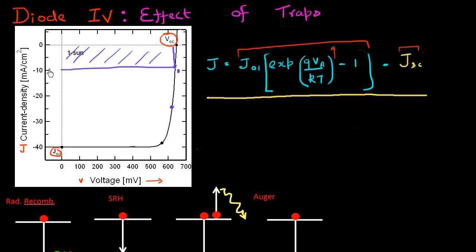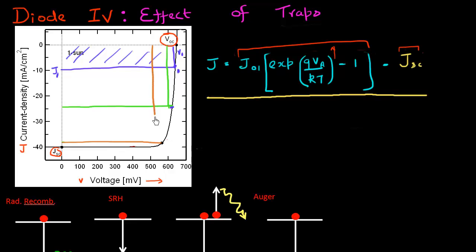If I'm operating at point number one, I'm operating at this much current and this much voltage, and the product of the two represents the power I can extract from this solar cell. Similarly, if I'm operating at another point, the area under the green triangle represents the total power output. I want to maximize this area, and that will occur at a voltage typically called the maximum power point voltage.